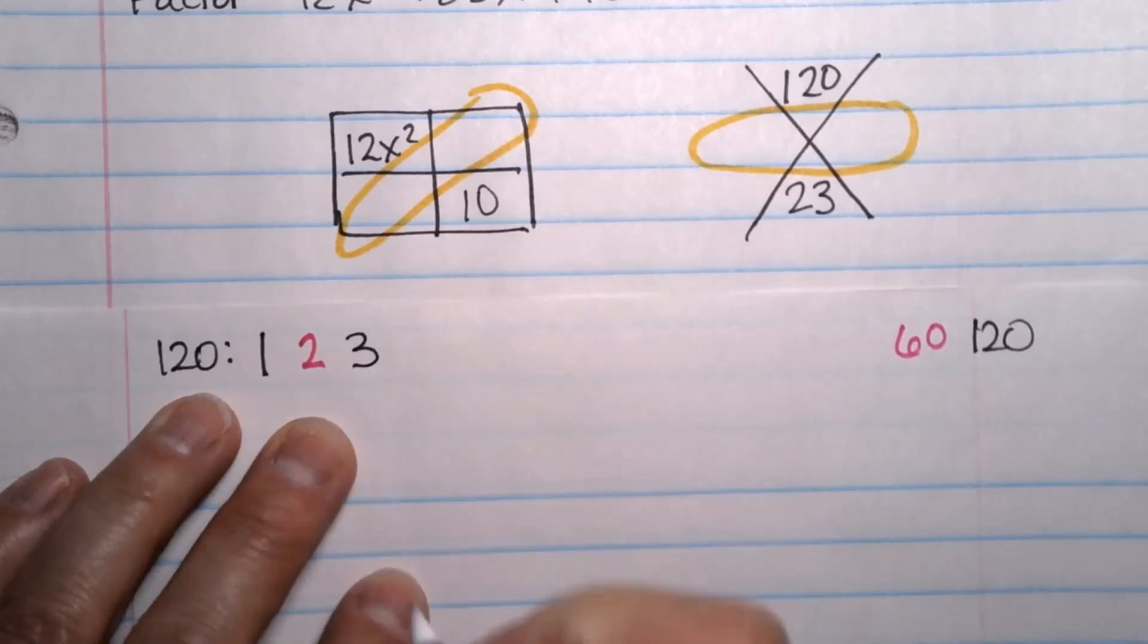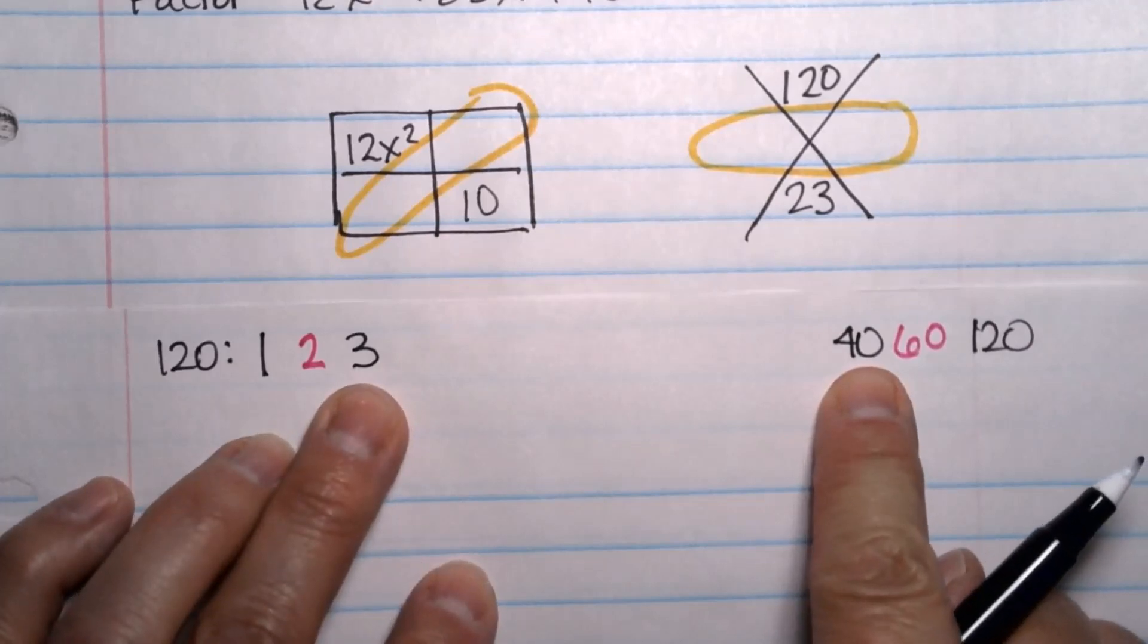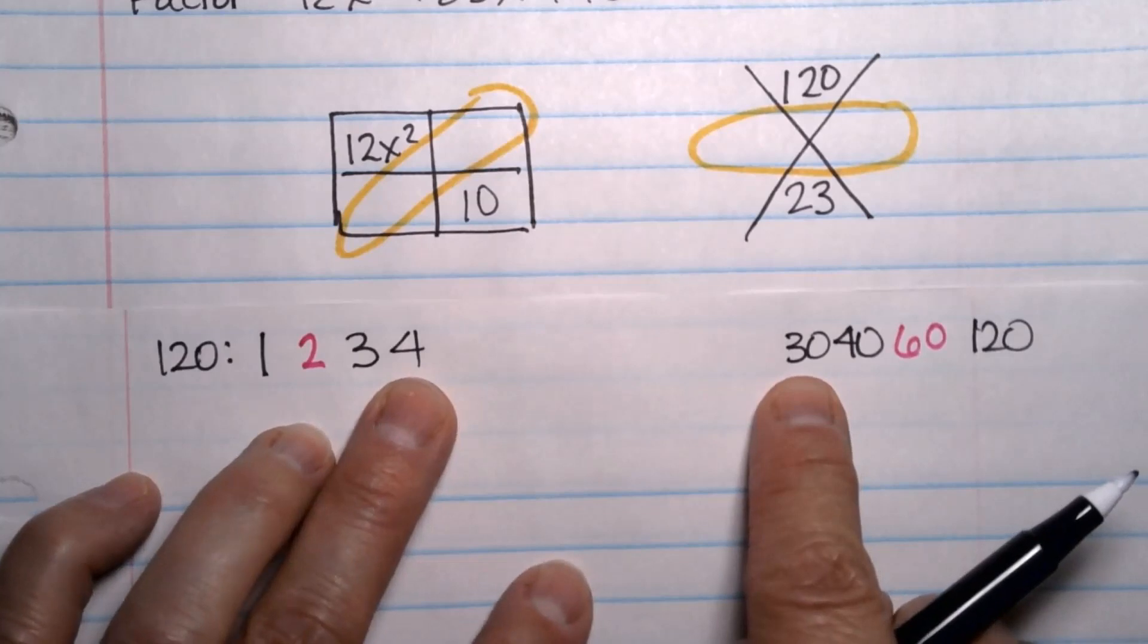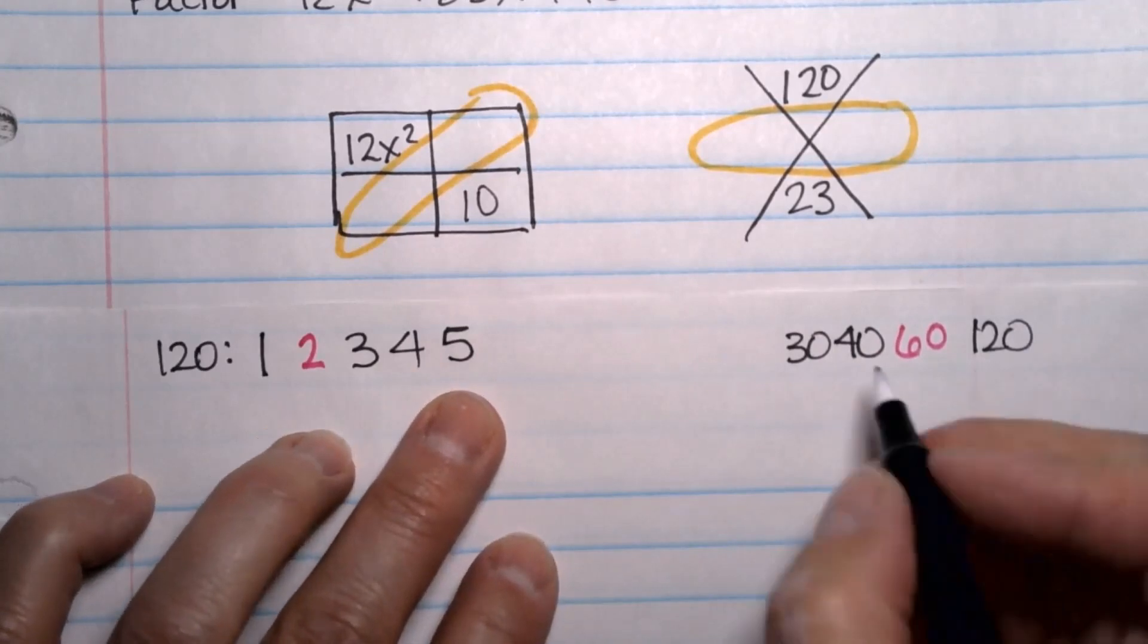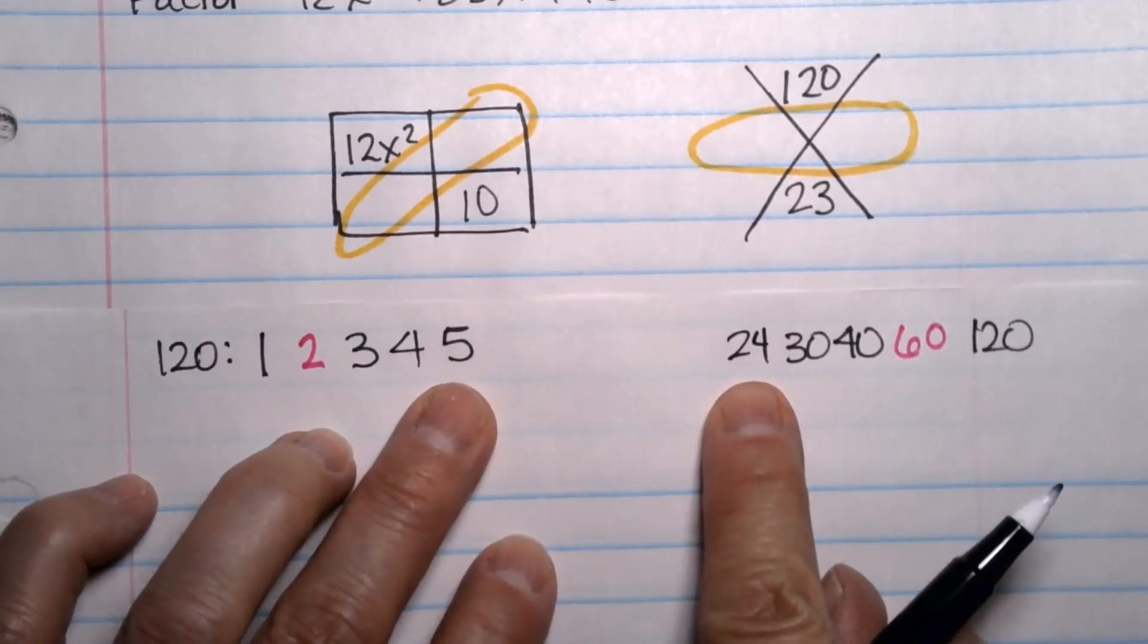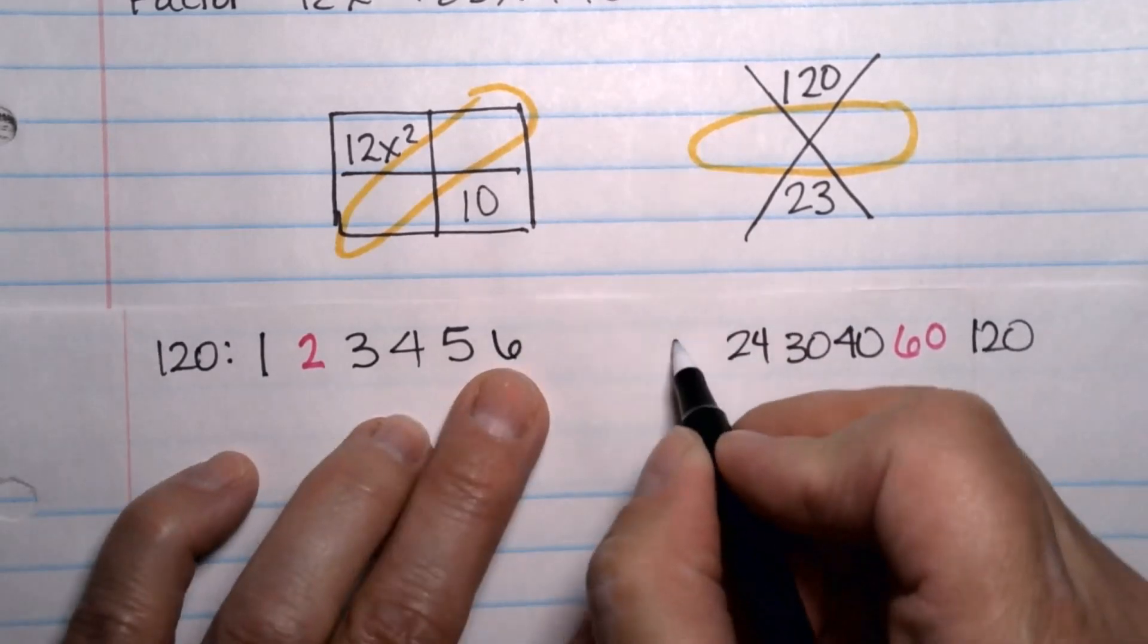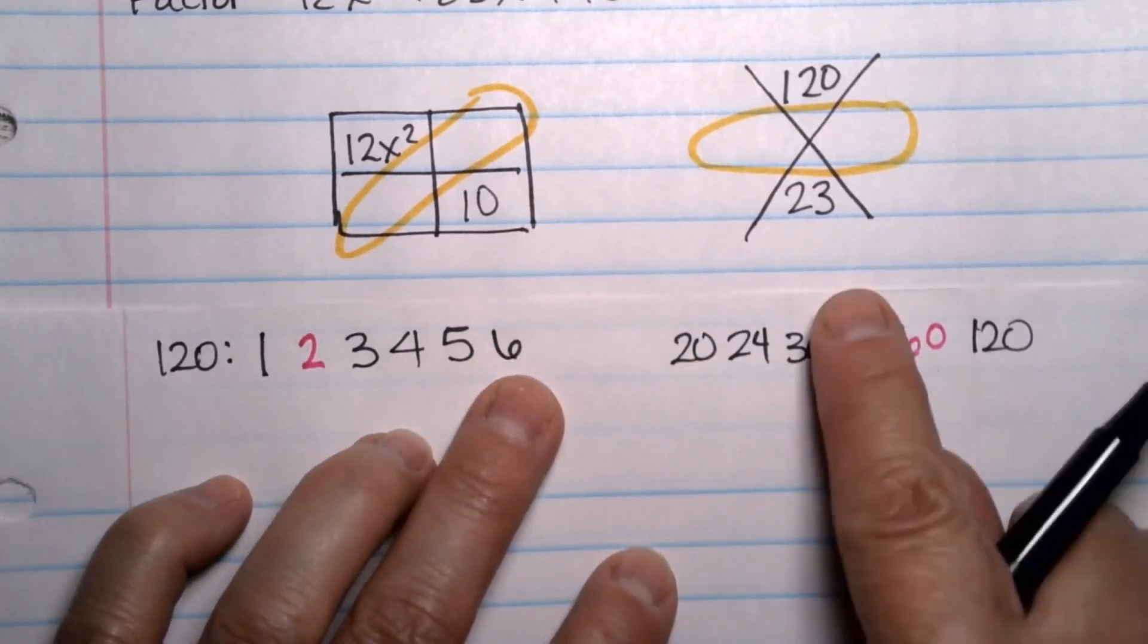I could use a three. Three goes into 120 forty times. That's also not adding up to 23. I could use a four. That would be 30. Four plus 30 is 34. That is not 23, but we're getting closer. Do you guys see how that's working? Then we're going to go to five. 120 divided by five is 24. So that's not working. So five and 24 doesn't add up to 23. So let's try six. That would be six and 20. That doesn't add up to, I mean, it multiplies to be 120, but it doesn't add up to 23.